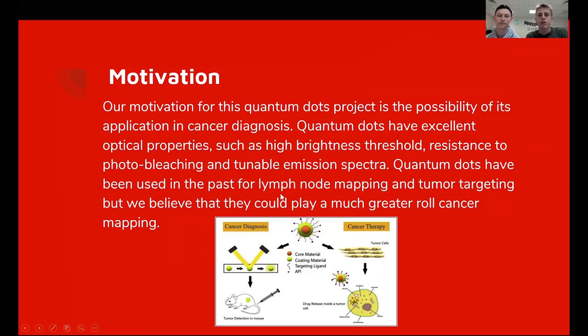quantum dots can be used to track cancer through the lymph nodes and tumors through targeting. So what we think here is that this rat is being injected with carbon quantum dots. And whenever these quantum dots come in, it targets these tumor cells and it lights up.